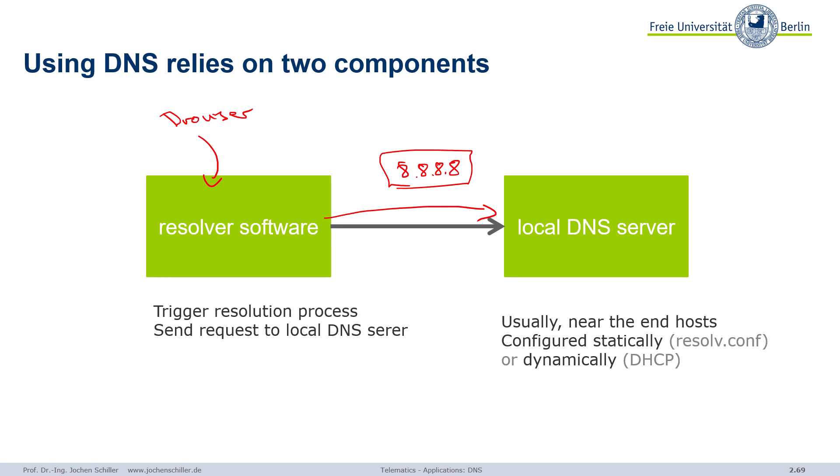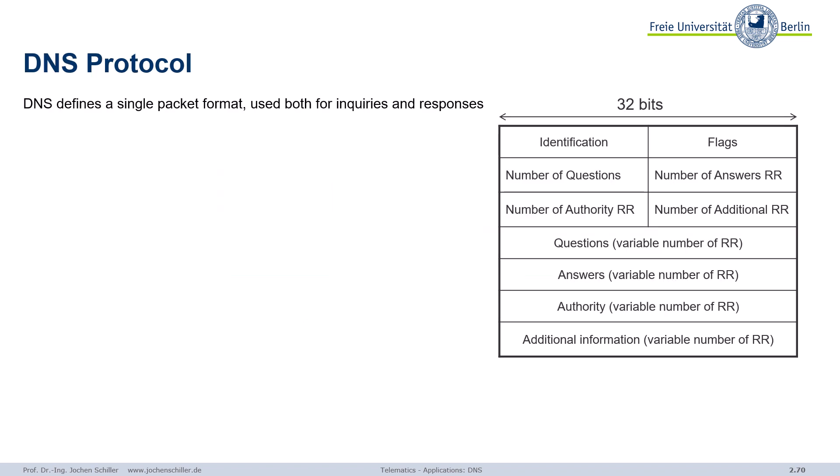Your local DNS server is usually close to your end host — maybe from your ISP or whatever. You can configure this by hand or dynamically via DHCP. There is a very simple protocol with a single packet format. The packet format is used both for inquiries and responses. The protocol runs over a well-known port — port 53. If you're unsure what a port is, go back to the bachelor lectures where we discussed socket programming, ports, and all that.